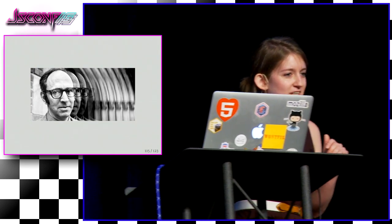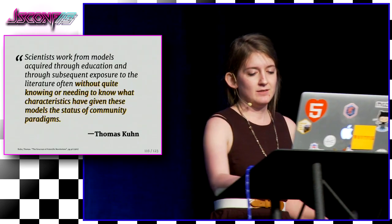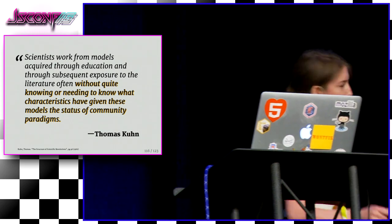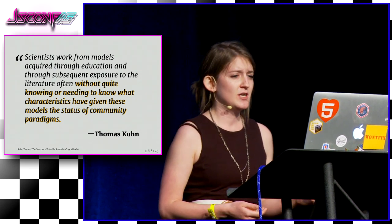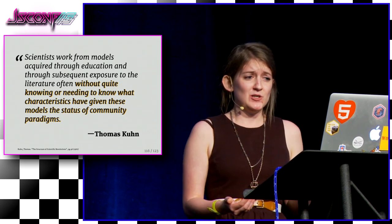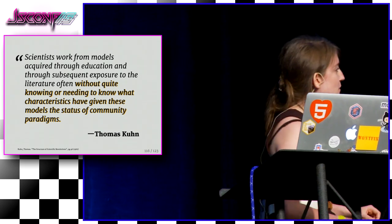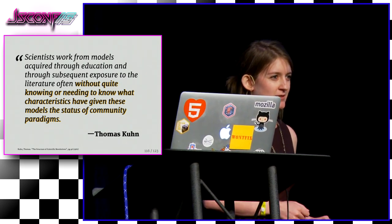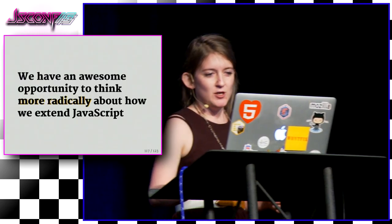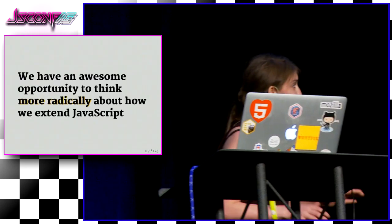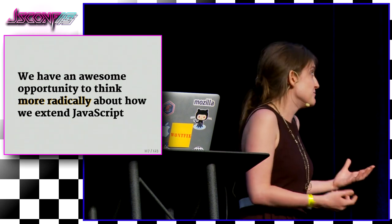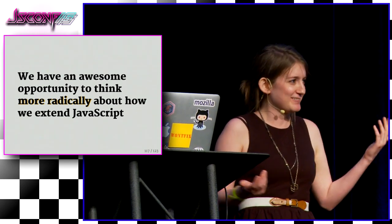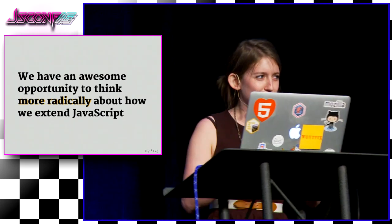Thomas Kuhn, a philosopher of science, says: scientists work from models acquired through education and subsequent exposure to literature, often without quite knowing or needing to know what characteristics have given those models the status of community paradigms. We can do better. We have an awesome opportunity to way more radically think about how we extend JavaScript. We don't need to join the cool kids club — some features are kind of like the Abercrombie and Fitch shirt of language features in middle school. We can really, really change things.